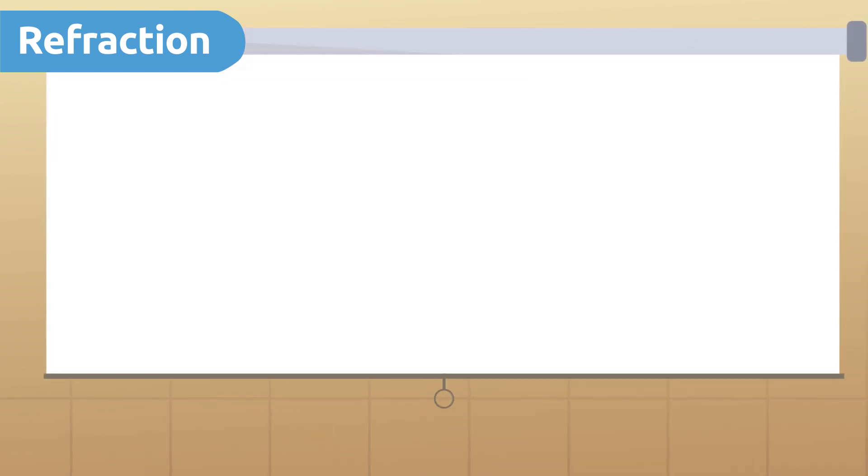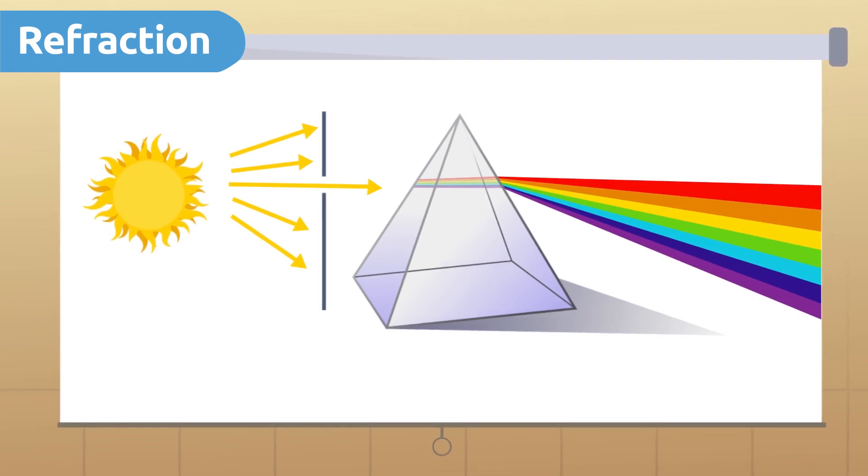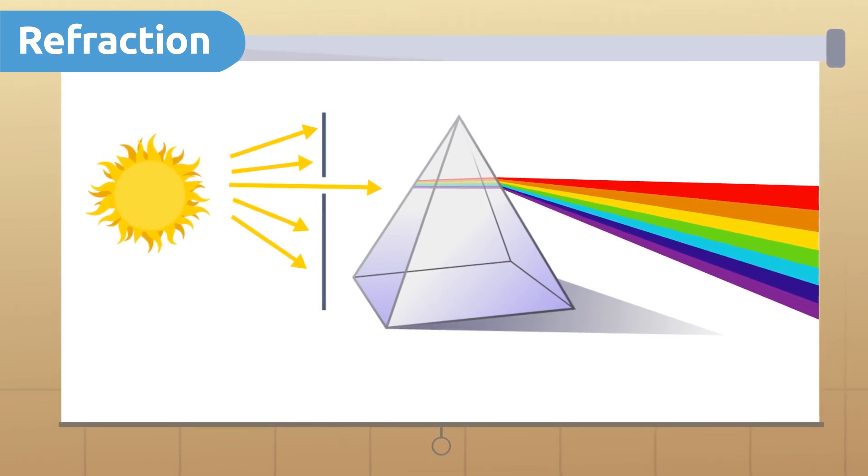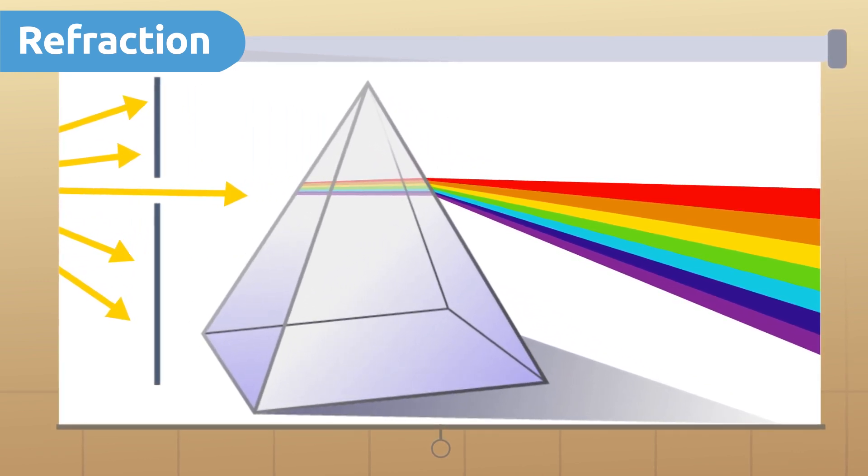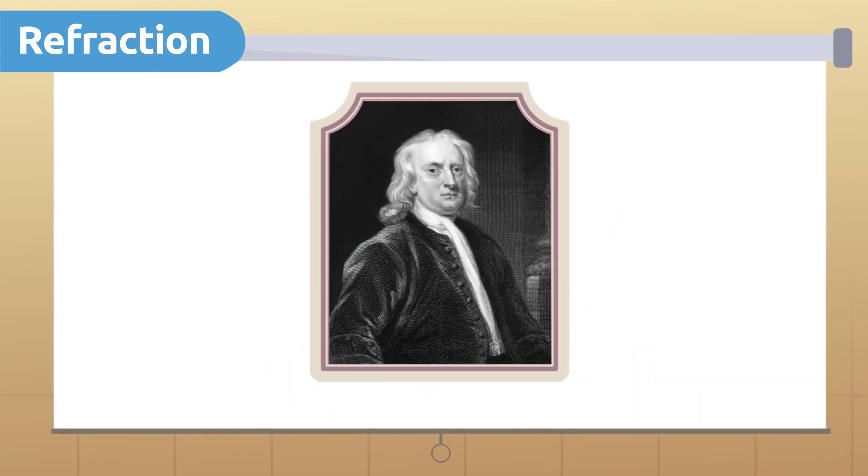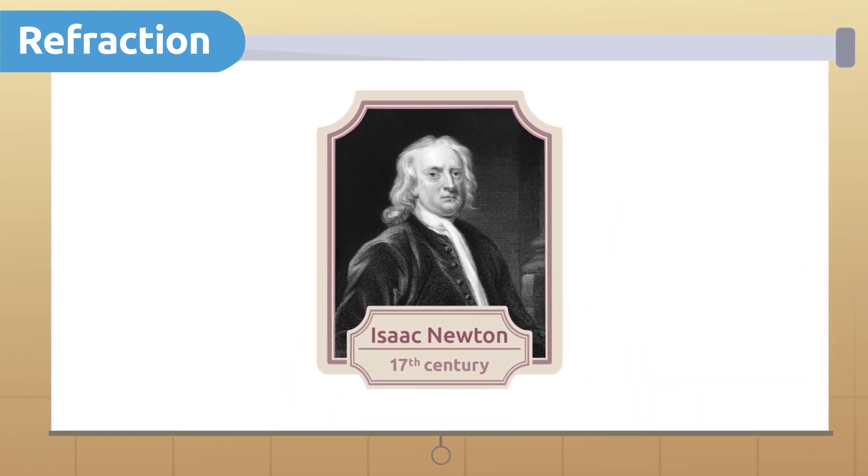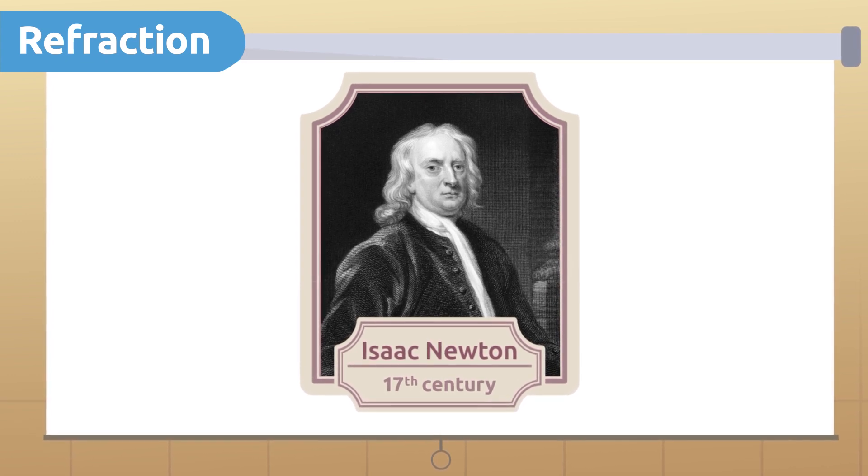Refraction is also the property that allows white light to be broken down into different colors. This phenomenon can be seen using a prism. When light rays reach the prism, they are broken down into different colors that make them up. Isaac Newton was the first to achieve this with an experiment done in the 17th century. Yes, it was that long ago!